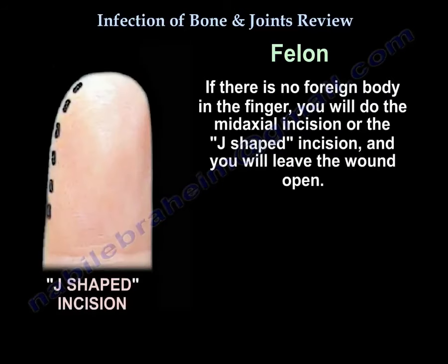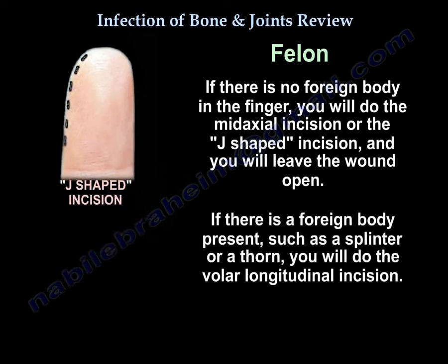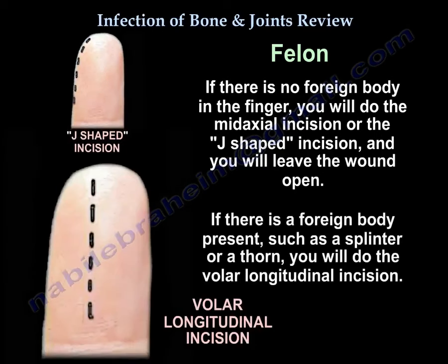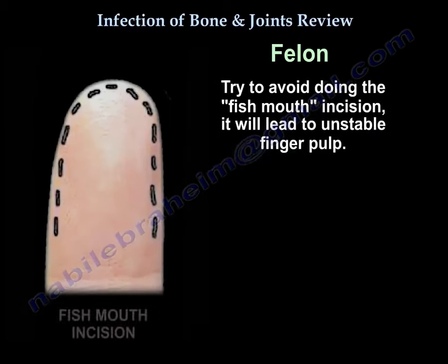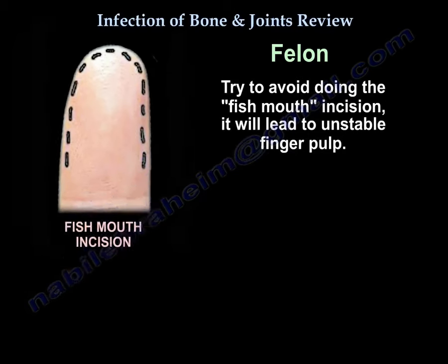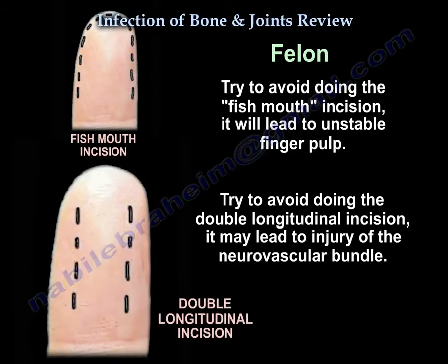If there is no foreign body in the finger, you will do the mid-axial incision or the J incision, and you are going to leave the wound open. If there is a foreign body like a splinter or a thorn, you will do the volar longitudinal incision. Try to avoid the fish mouth incision, as it will lead to unstable finger pulp. Also try to avoid the double longitudinal incision because it may lead to injury of the neurovascular bundle.